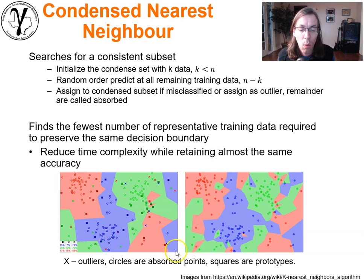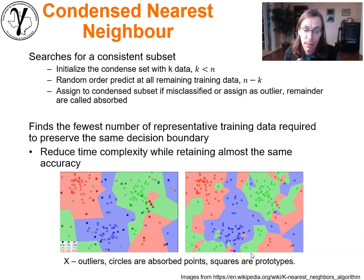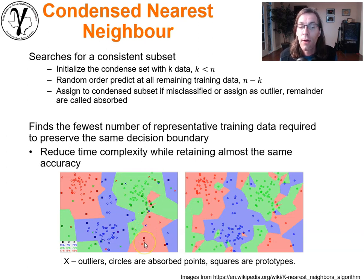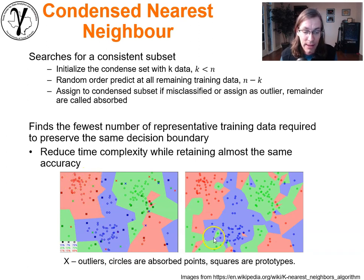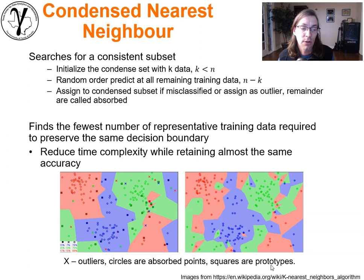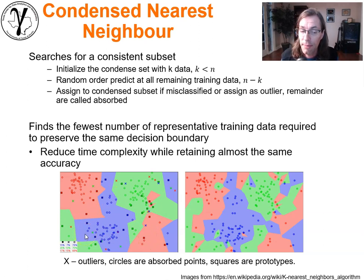Here's an example directly from Wikipedia. We have the original data set here doing classification with K nearest neighbor, and these would be the decision boundaries using all of the data. The Xs are all of the outliers that are going to be removed because they're locally considered to be anomalous. The circles are the absorbed points — the ones you really don't need to change the model. And the squares are going to be retained as the prototypes, or the condensed subset. You can see immediately that it doesn't take a lot of data to get decision boundaries that are somewhat similar, though we are sacrificing some accuracy.